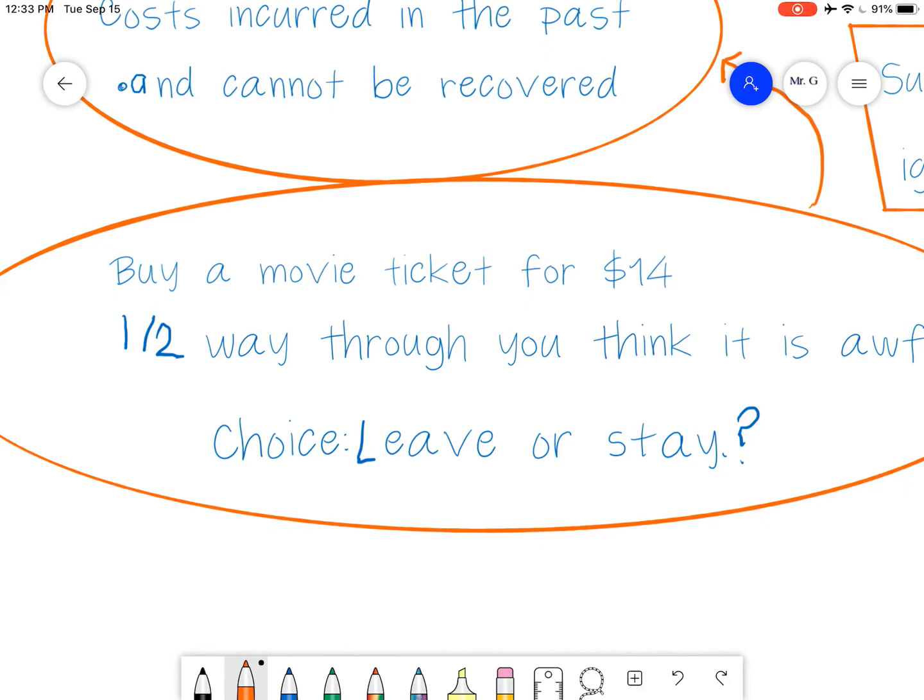So you buy a movie ticket for $14. Halfway through, you think that it's an awful movie. It's horrible movie. You don't like it. Well, what is really your choice at that point? You're halfway through a movie. You're not getting a refund. They're not going to give you a refund on a movie. So your choice is because you're using scarcity of time. So your choice is about time. Now it's not about the money. You've paid the money. It's a sunk cost. It shouldn't factor into your decision because you're not getting the money back.